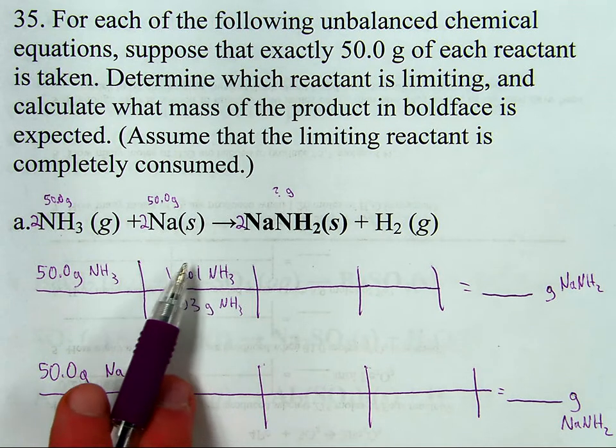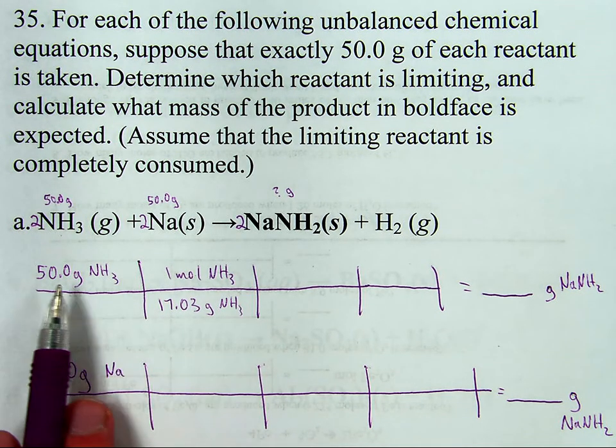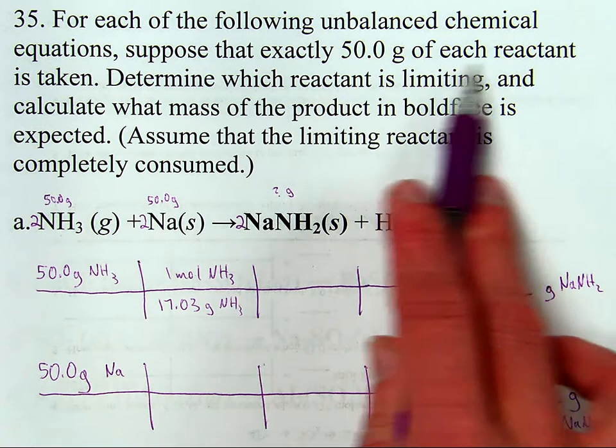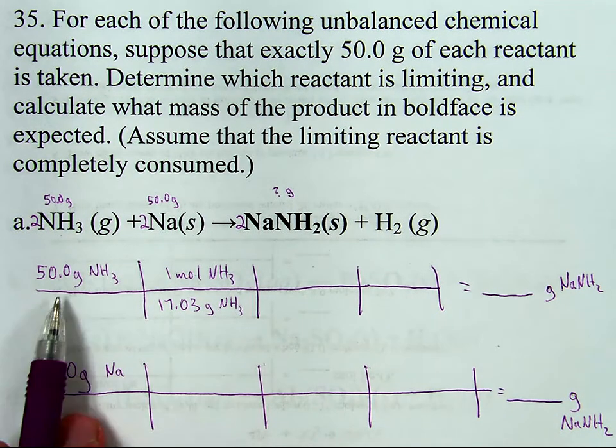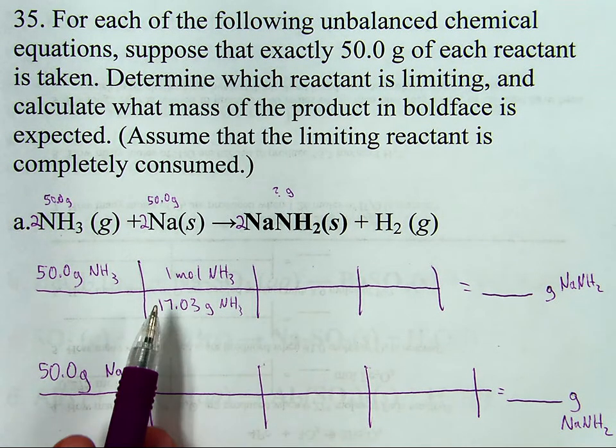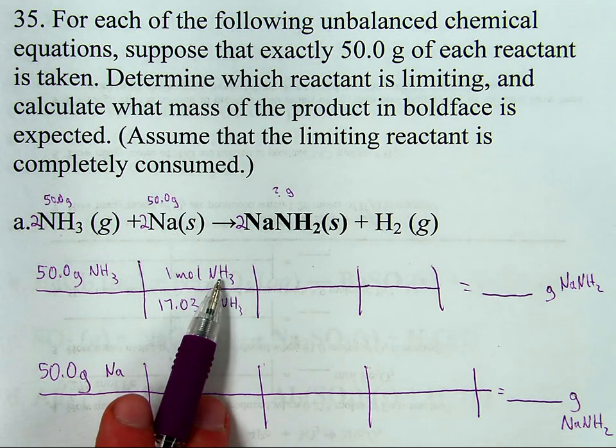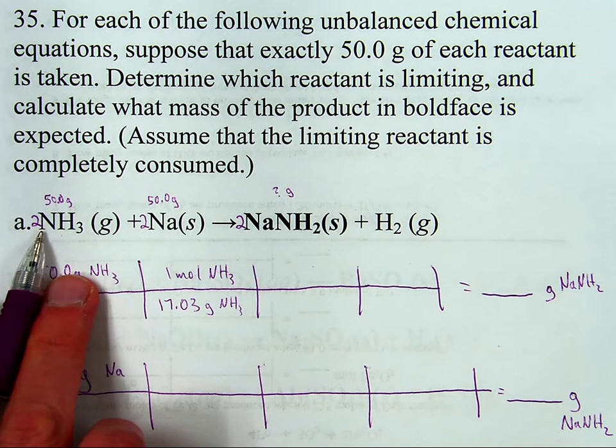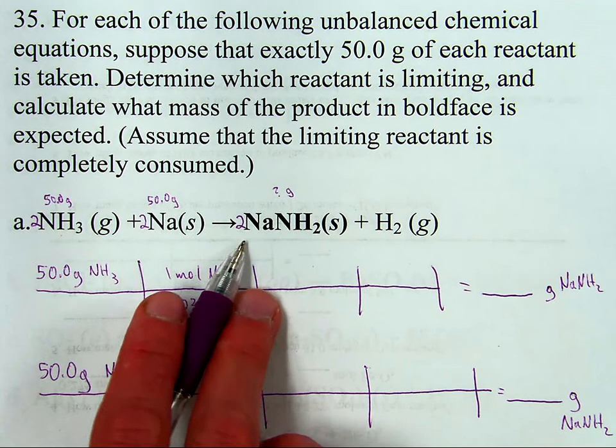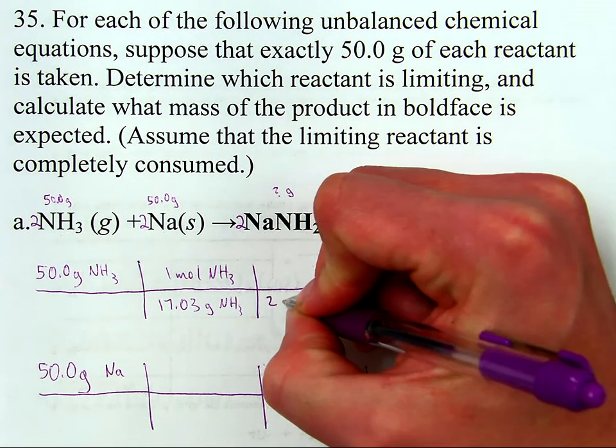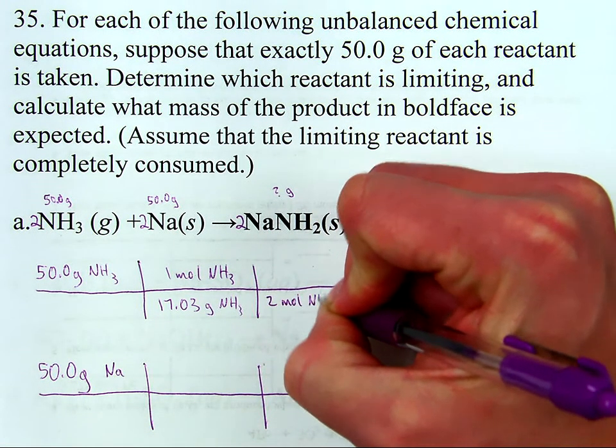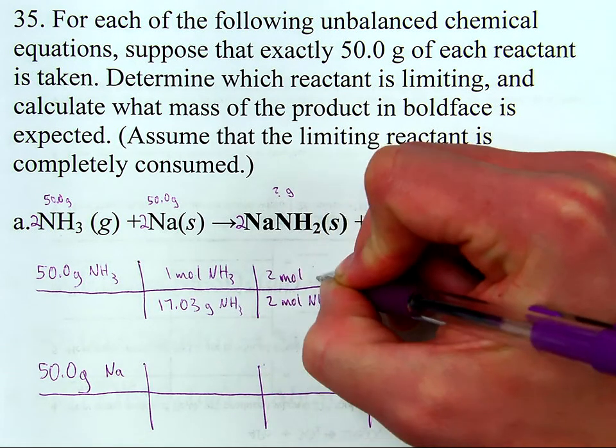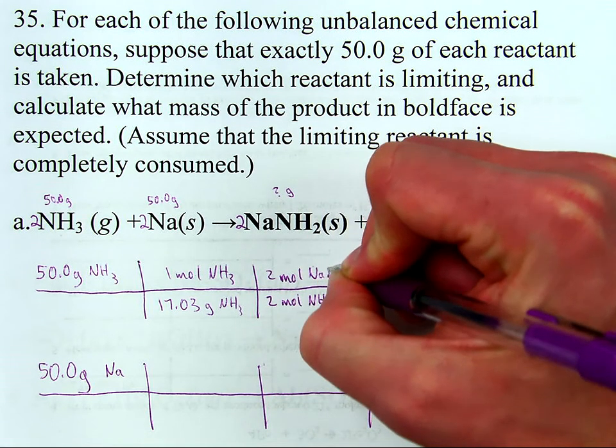The reason why I needed to make sure I had that balanced was for what comes next. I take the grams of what I'm given because it says I start with 50 grams of each reactant. Convert it to moles. Now I need to go from moles of this to moles of what I'm trying to find. And according to the equation, for every two moles of ammonia there's two moles of what I'm trying to find. So I take that straight out of the equation. Two moles of ammonia for every two moles of NaNH₂.